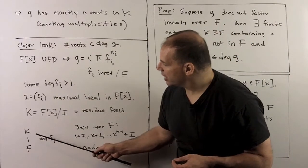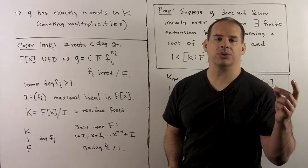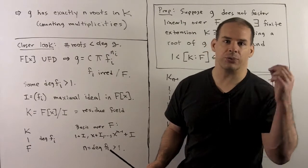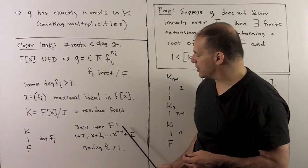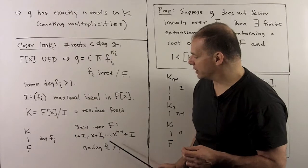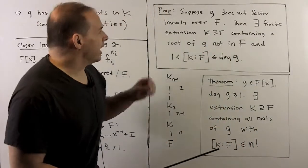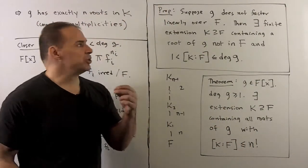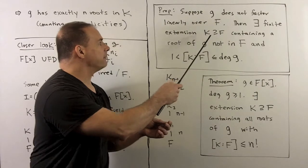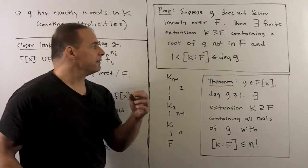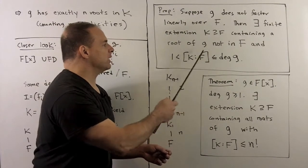This is a proper extension of f, and also a finite extension with degree equal to the degree of f_i. For a basis over f, we have 1+I, x+I, all the way up through x^(n-1)+I, where n is the degree of f_i, which is strictly larger than 1. This gives the proposition: if g does not factor linearly over f, then there exists a finite extension k containing f that contains a root of g not in f, and the degree of k over f is between 1 and the degree of g.